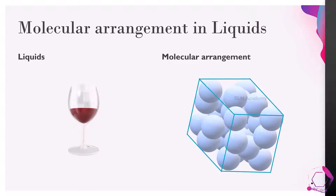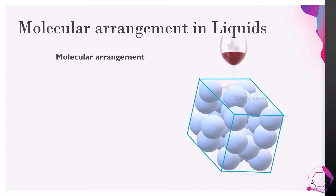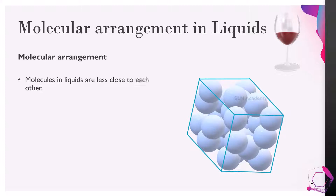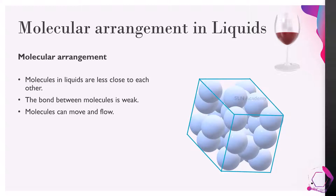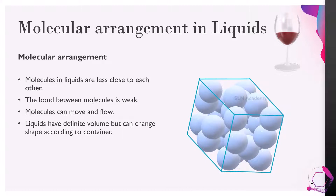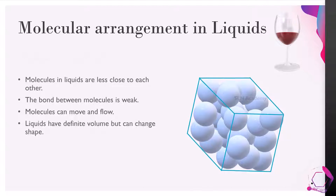Why are liquids able to flow? Molecules in liquids are less close to each other and the arrangement is loose. The bond between the molecules is weak, and there is some space between them. This allows the molecules to move and flow. Liquids have a definite volume but can change shape according to their container.